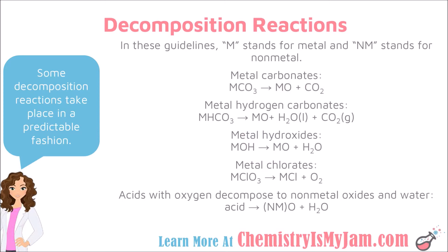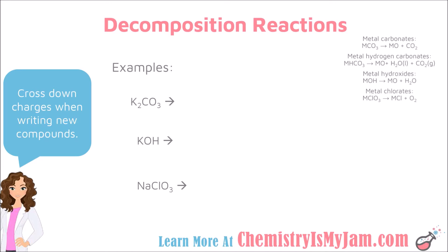Here are some examples of decomposition reactions where we are going to be predicting our products using these rules. Notice I can recognize that they are all decomposition reactions because there is only one reactant — these things are going to break down into two or more products. The first example is potassium carbonate. So I am going to go to the rule about the carbonates. Potassium is a metal, so a metal carbonate is going to break down into a metal oxide plus carbon dioxide. In this case, my metal is potassium and the reaction is going to form potassium oxide plus carbon dioxide.